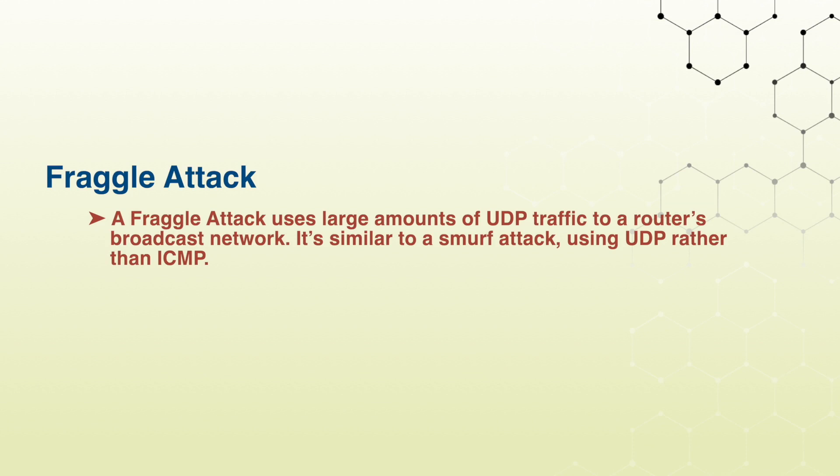The next one is fraggle attack. A fraggle attack uses a large amount of UDP traffic to a router's broadcast network. It is similar to a smurf attack, using UDP rather than ICMP. Basically the client-server architecture is like request and response, and here instead of ICMP packets it uses UDP packets.